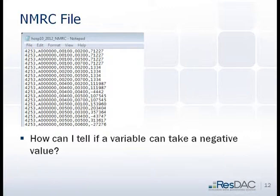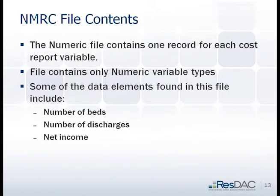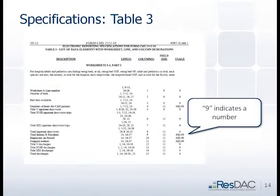How can I tell if a variable can take a negative value? That's a common question. With some of the financial pieces, there might be negative numbers, and people wonder whether a variable can even take a negative value. The way to determine that is through the Specifications document. Find the variable in the Specifications document and look at the Usage. You'll see nines — that indicates it's a number found in the numeric file and can only be a whole number, it can't take a negative value. A variable with eight positions before the decimal and two after is read that way. If there's a negative sign in front of the nine, that indicates it can take a negative value. So if you see something odd in the data that's negative and you don't understand why, go to the Specifications document to see if it could have a negative value.